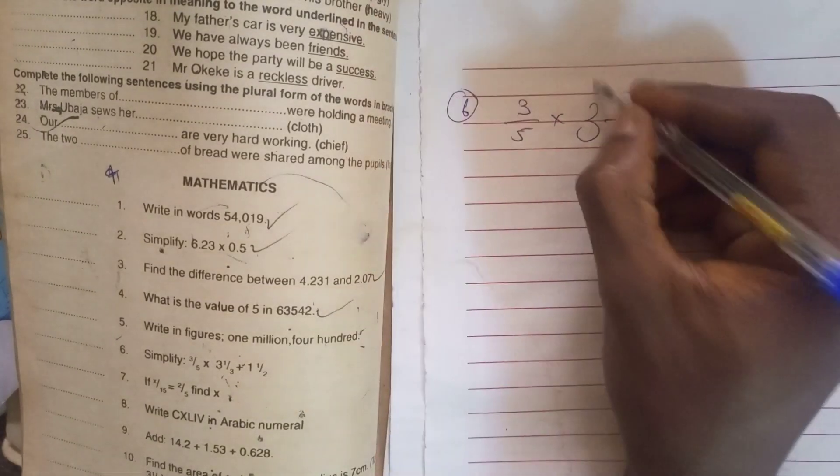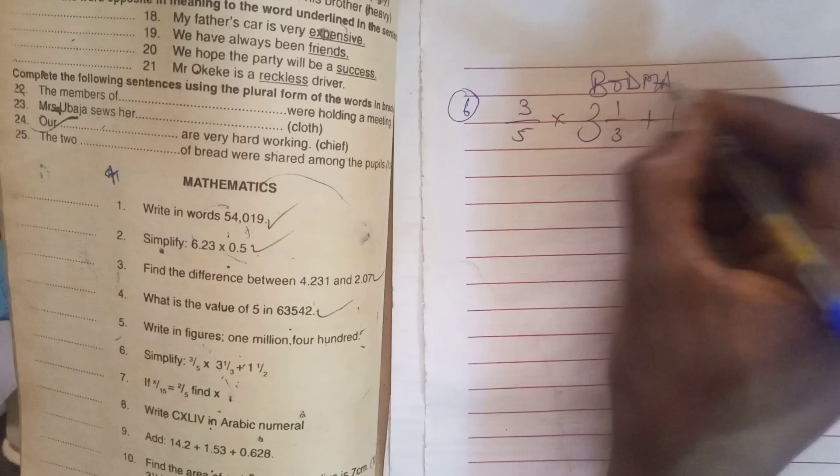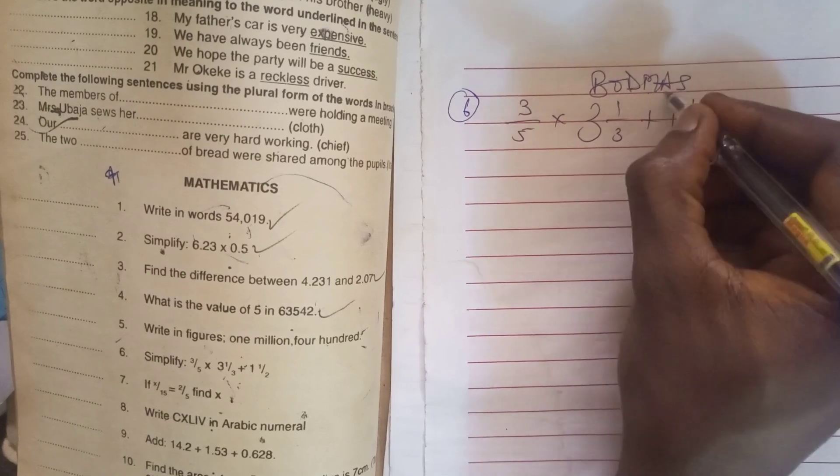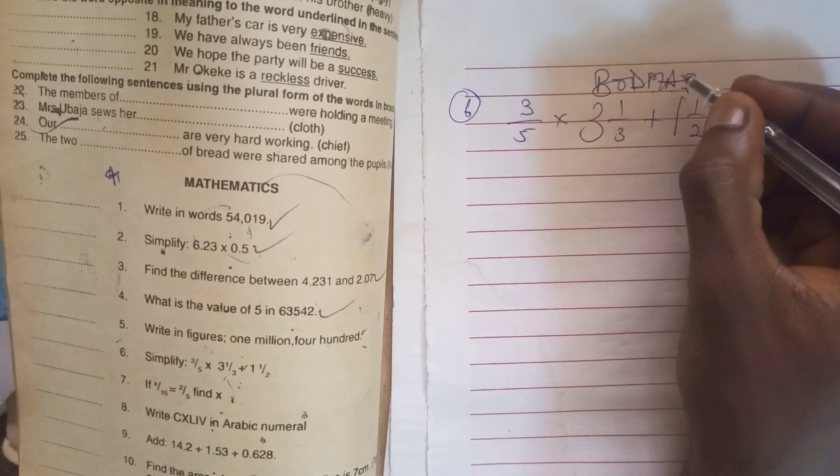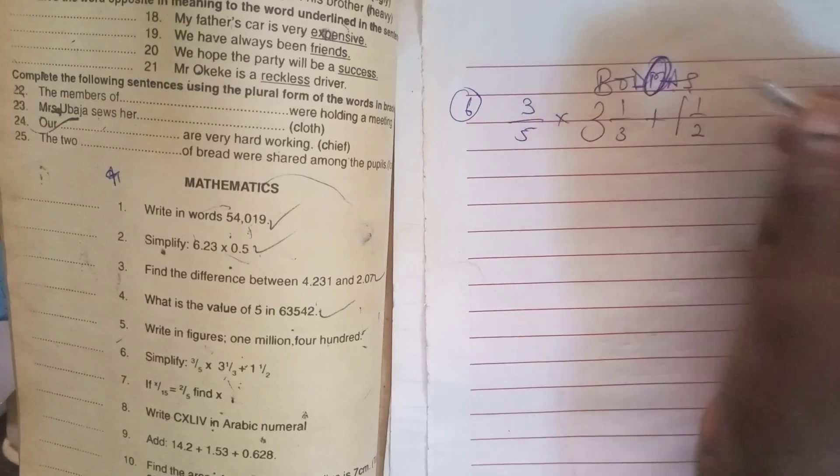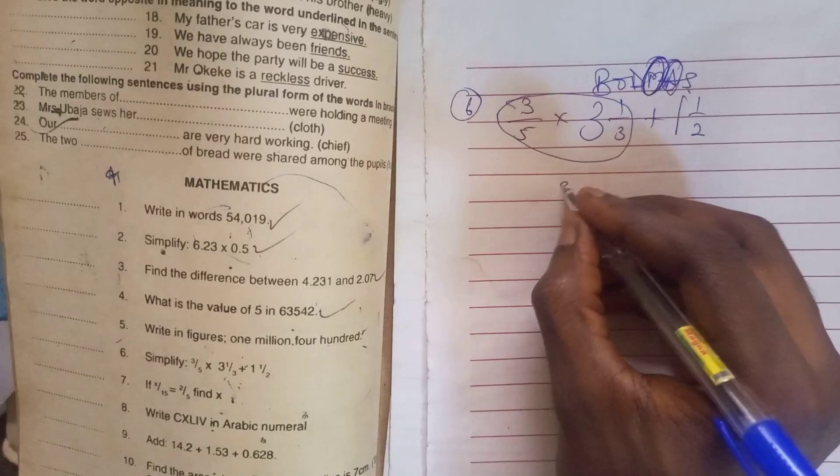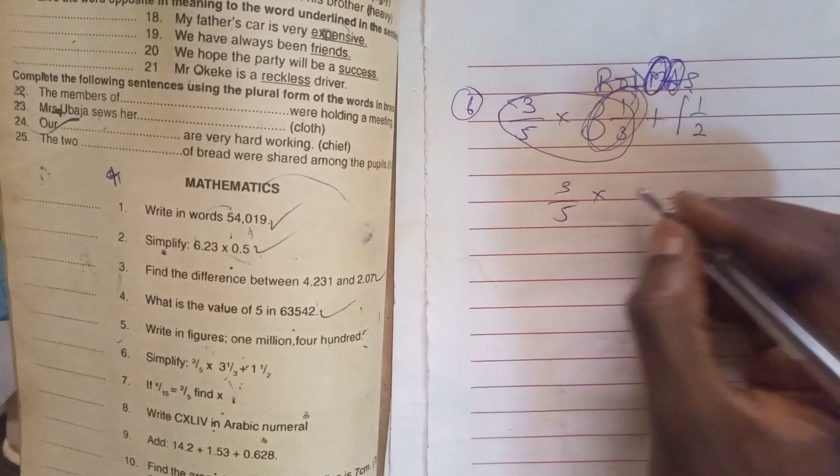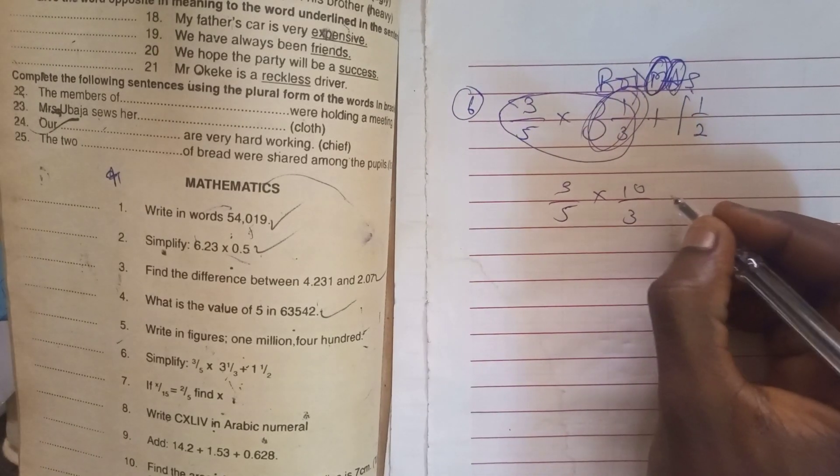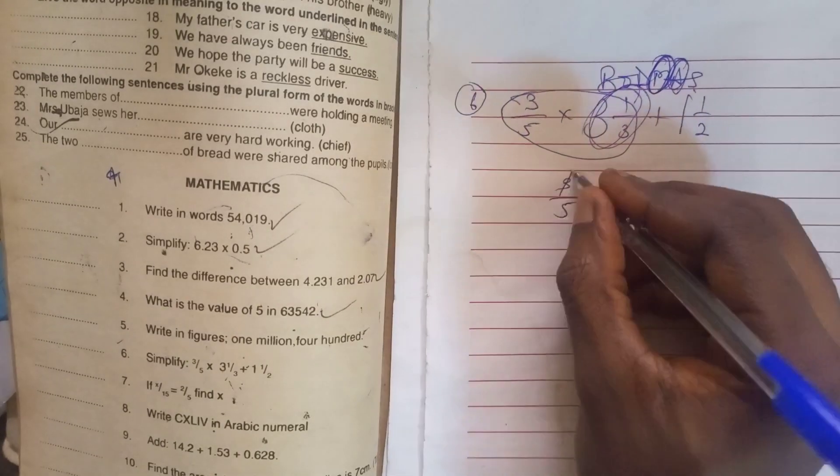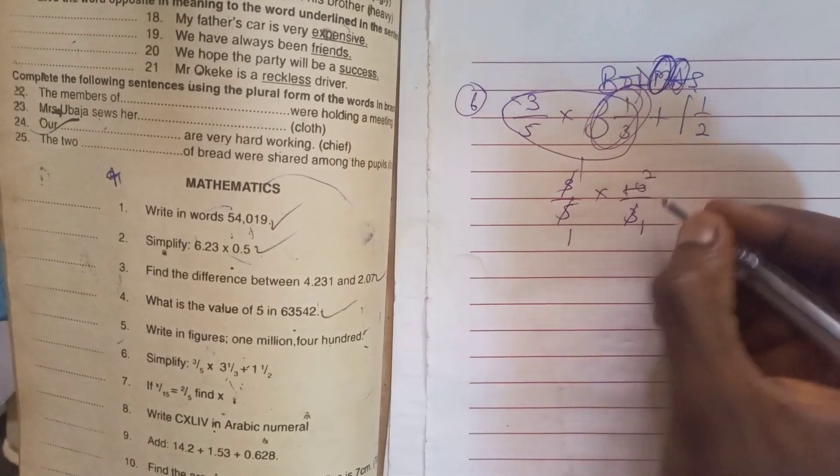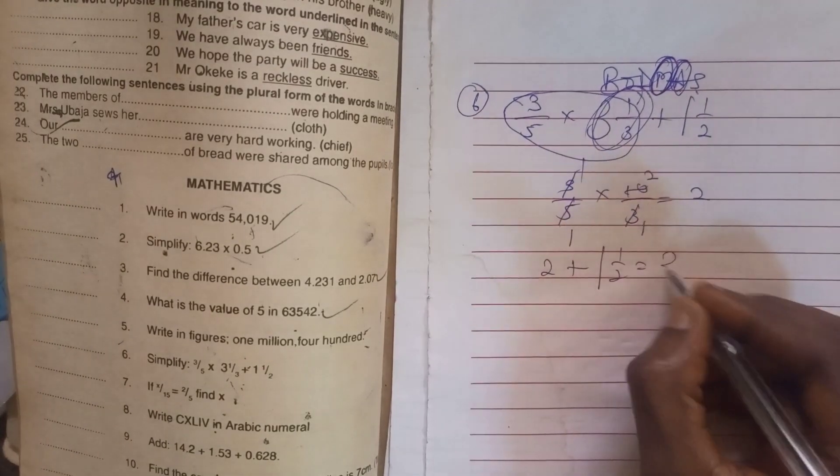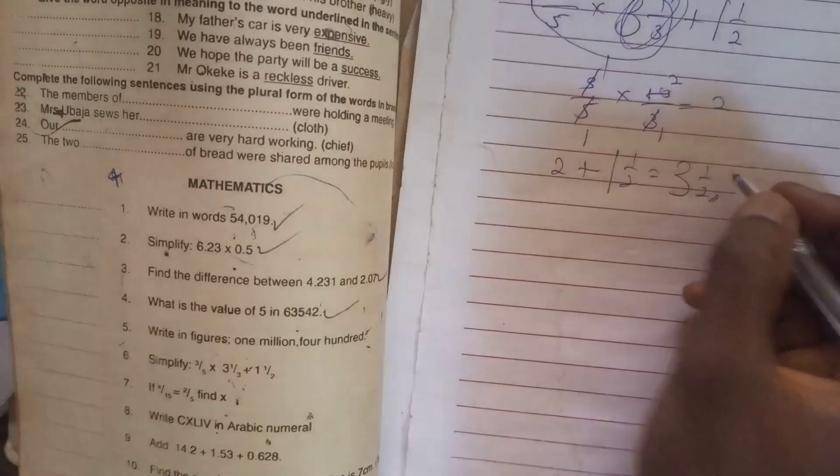Now looking at this, you make use of your BODMAS. The first is division, multiplication, addition, and subtraction. So you first of all make use of multiplication before addition. So we make use of this, that is 3 over 5 times. You change this to improper fraction, which makes it 10 over 3. So we solve this. 3 here, 1. 3 here, 1. This is 1, this one is 2. So you have our answer as 2. So 2 plus 1 whole number 1 over 2 is 3 whole number 1 over 2. That's our answer, very simple.